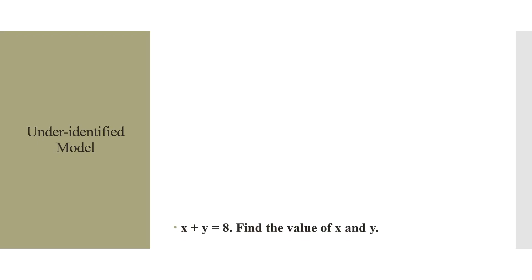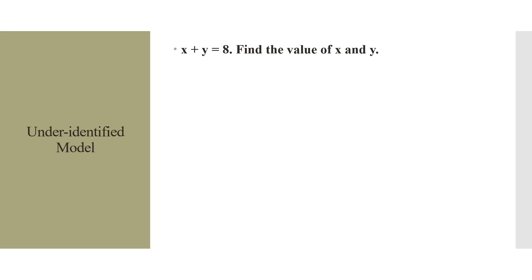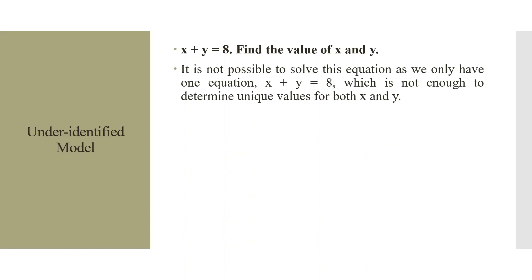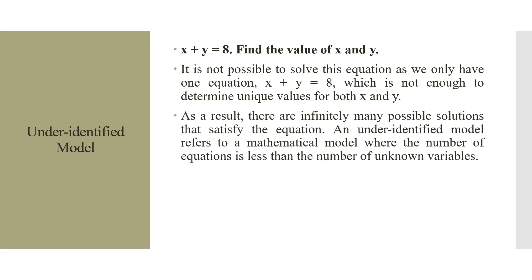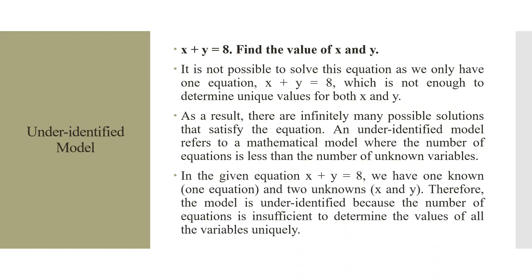What is the concept of an under-identified model? Consider: x + y = 8 — find the value of x and y. It is not possible to solve this as we have only one equation but two unknowns, which is insufficient to determine unique values for x and y. There are infinitely many possible solutions. An under-identified model is one where the number of equations is less than the number of unknown variables, making it impossible to determine all variable values uniquely.